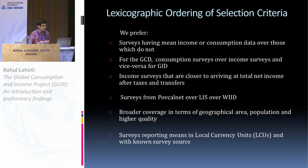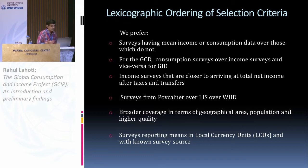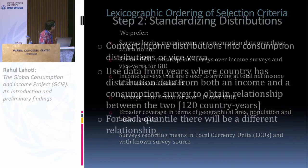In our ordering, we prefer surveys which have mean information over those that do not. For the consumption survey, we prefer consumption surveys when there is a choice. Income surveys that are closer to arriving at a total net income concept are preferred. We do not standardize the income concept across the board because we found that not to be possible due to lack of data. We prefer surveys from PovCalNet over LIS and WID, mainly because PovCalNet and LIS have better means data.